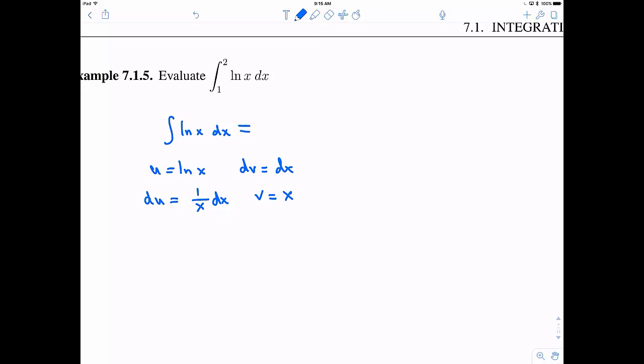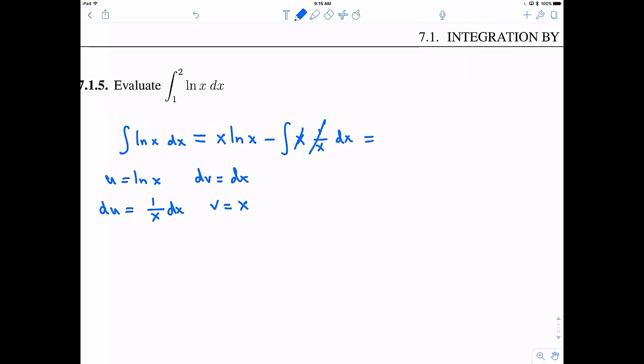Now according to the integration by parts we have this integral is equal to uv. So I'm going to write x natural log of x minus the integral of v du. So v is x and du is 1 over x dx. Alright these things cancel out and so I get x natural log of x and then minus and when I integrate I guess 1 dx I get x plus my constant of integration.